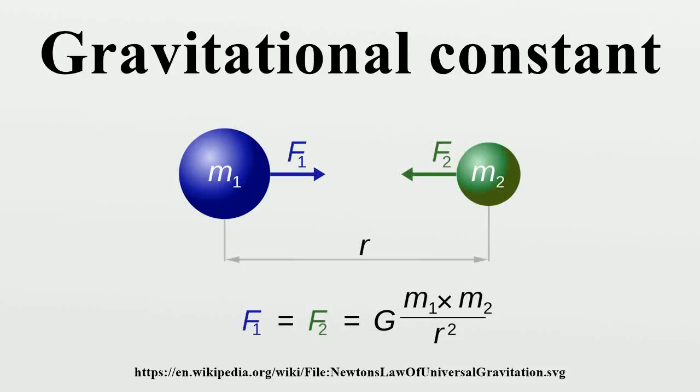The gravitational constant, approximately 6.674 × 10⁻¹¹ N·m² per kg², denoted by the letter G, is an empirical physical constant involved in the calculation of gravitational force between two bodies.